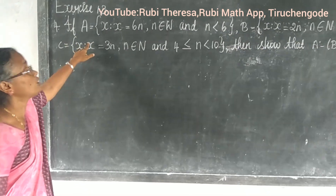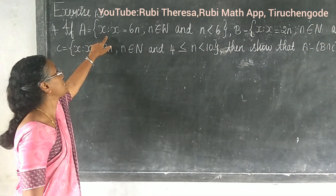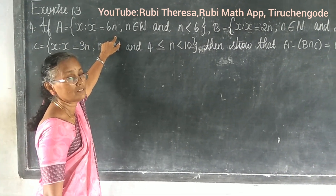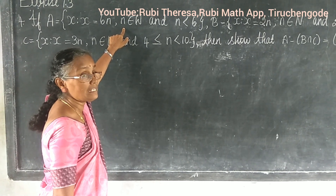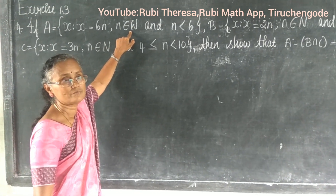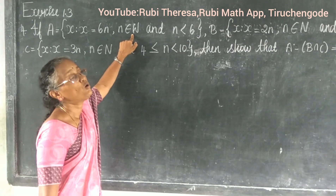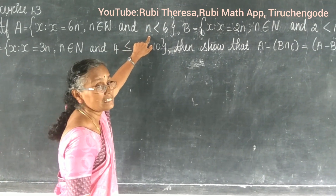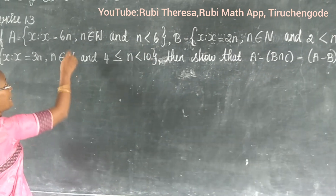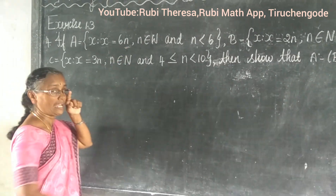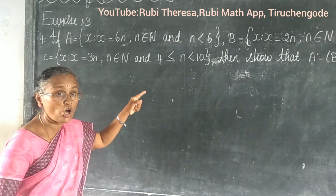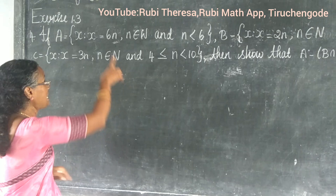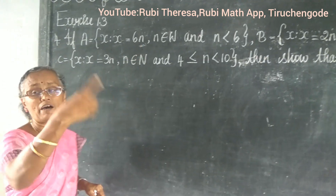If A equals x such that x equals 6n, n is an element of W — where W means whole numbers and n is less than 6. So in the place of n, what should you write? 0 to 5. And 6n means multiples of 6.